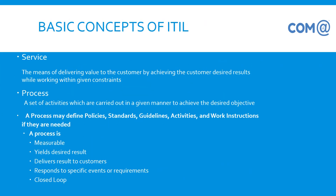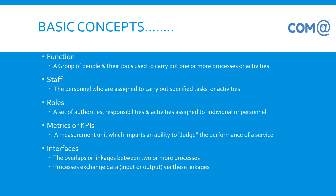In ITIL, everything is termed as a service — whether it is a file service, internet service, or web service; whatever we offer to the end user is called a service. A process is a set of activities carried out in a given manner to achieve the desired result, and it is always measurable. It delivers results to the customer — we set targets and ensure we are meeting those targets month on month, week on week. It is a closed loop taking care of end-to-end requirements in the IT industry.